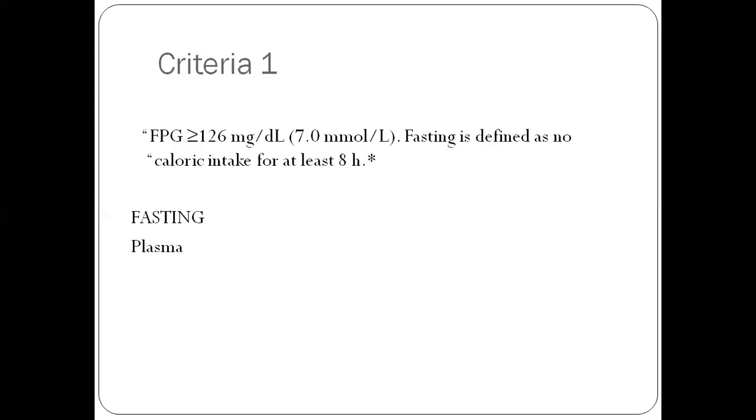You need to understand the terminology correctly. This is fasting plasma glucose. Blood is made of cells and plasma. You remove the cells from the blood and then you get the plasma. This value is for plasma. And get your terminology correct. It is glucose, it's not sugar. Sugar is sucrose, fructose, lactose, galactose. But when you're talking about diabetes, we're talking about glucose.